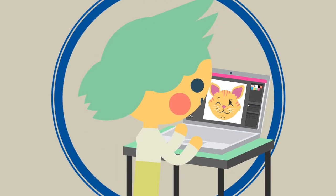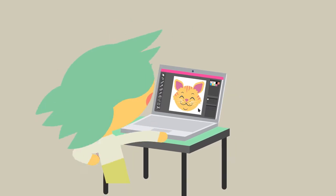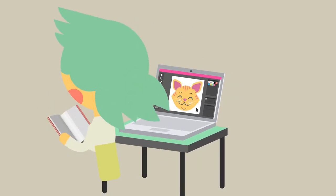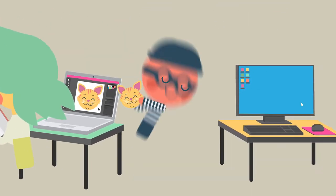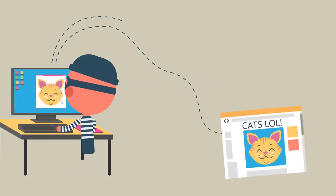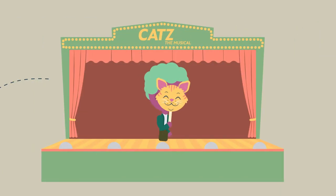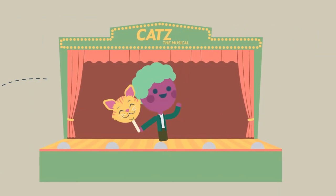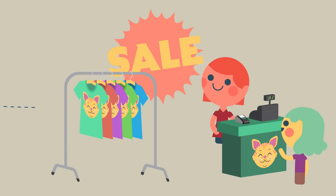So what does this mean? Copyright owners have rights. They have a number of exclusive rights to control how their work is used by others. These rights include the right to reproduce their work in any format including electronically, publish their work, perform or communicate their work, and make adaptations of their work.